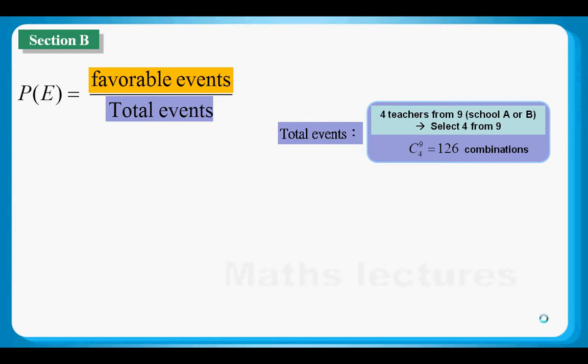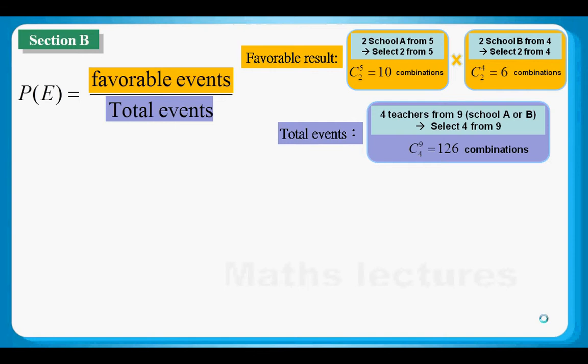What about the numerator — the favorable events? To calculate the favorable events, we have to do it in two parts. First, we have to choose two teachers from School A, that is choosing two from five, which is 5C2 — giving us 10 combinations. Similarly, we need to choose another two teachers from School B, which is 4C2 — six combinations. Altogether, we have 60 combinations.